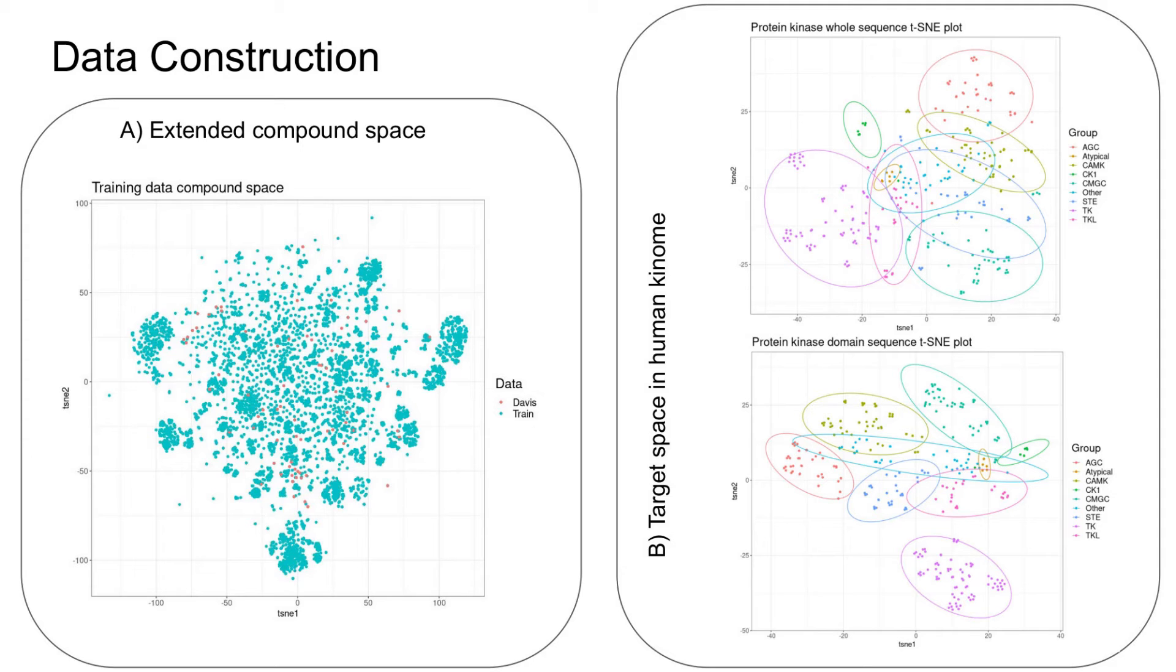To test if such representation will improve our ability to differentiate between kinase groups, once again t-SNE analysis was performed. The figure above shows t-SNE analysis of whole protein sequences while in comparison the figure below shows t-SNE performed using only conserved domains.